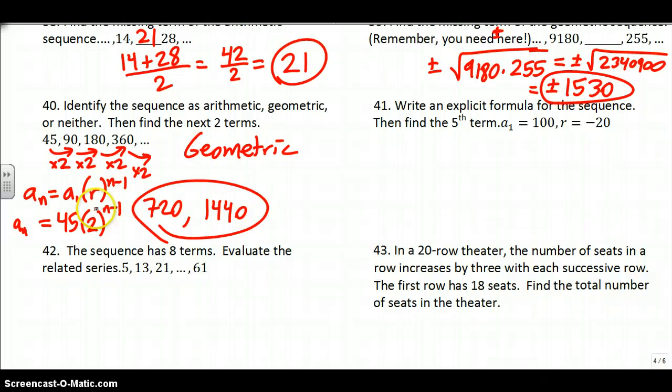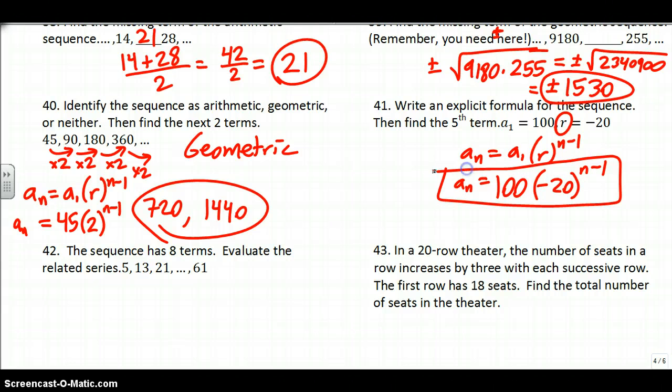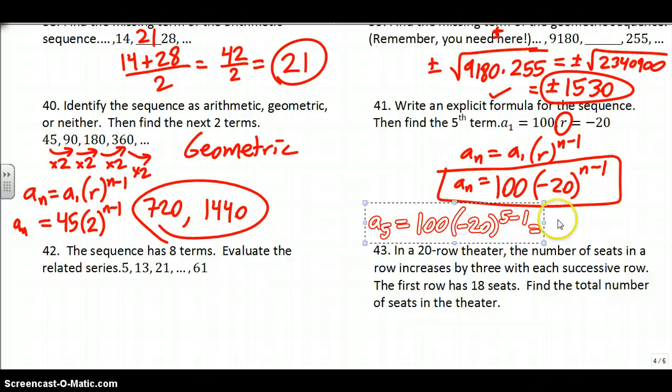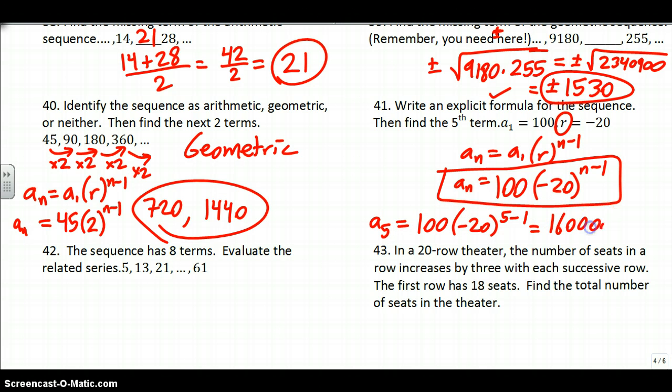41. Write an explicit formula for the sequence. We just did that. It's geometric because I know it has R - R is the geometric one, D is the arithmetic one. It's AN equals A1 R to the N minus 1. Let's get the formula first: 100 is A1, R is negative 20 to the N minus 1 power. There you go, formula. Then find the fifth term. We're going to plug in 5 for N. We're going to take negative 20 to the fourth power. Make sure you put the negative in parentheses, then multiply by 100. You get 16 million as the fifth term. Make sure you put the negative 20 in parentheses, otherwise it won't take the negative to the fourth power.